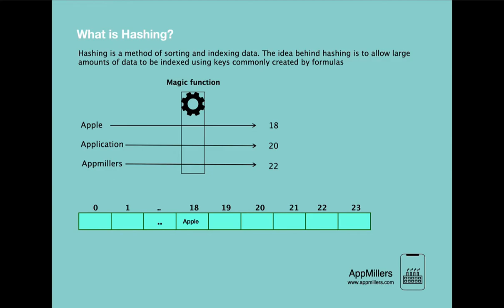The next string is application. When we convert application to a number it becomes 20, so we insert application at index 20. The next word is app millers. When we convert app millers using the magic function it becomes 22, so we insert app millers at index 22. With this, we have completed converting the strings to integers and inserting them into the array.